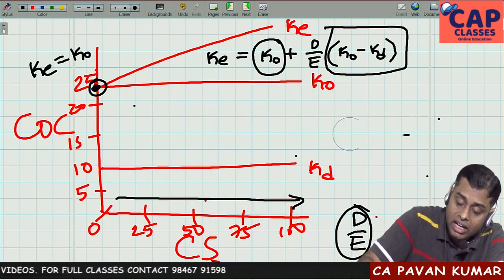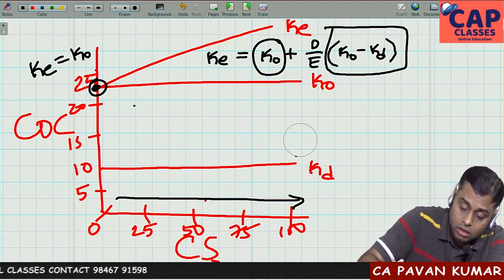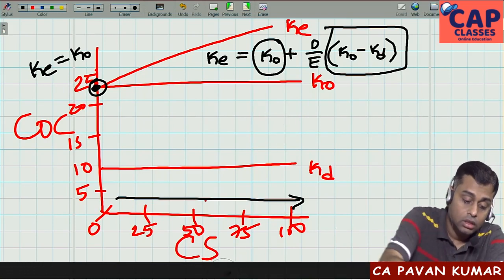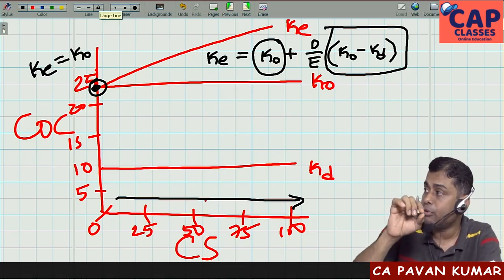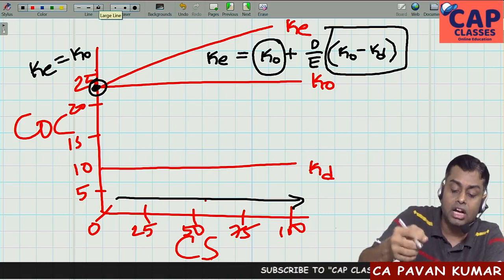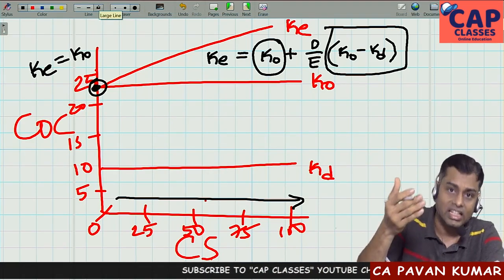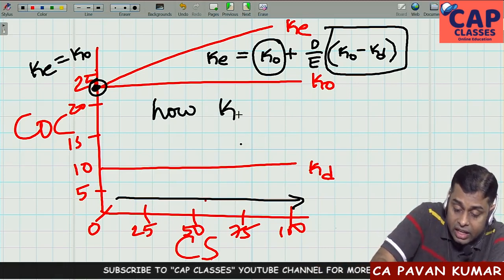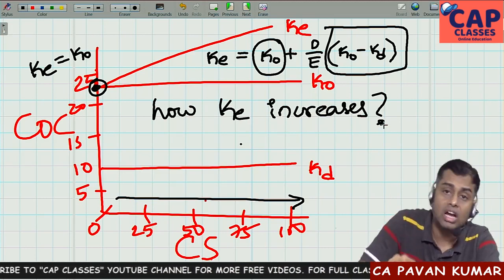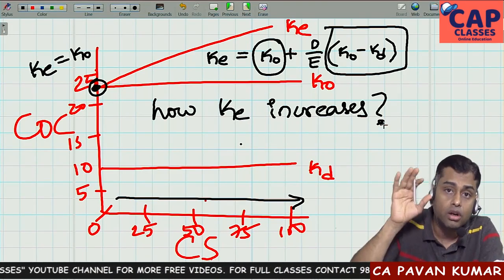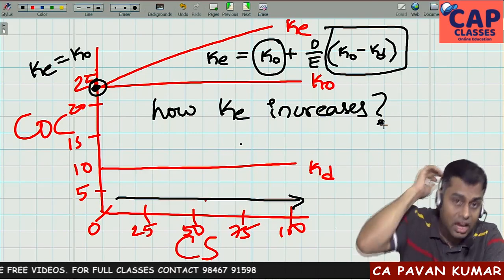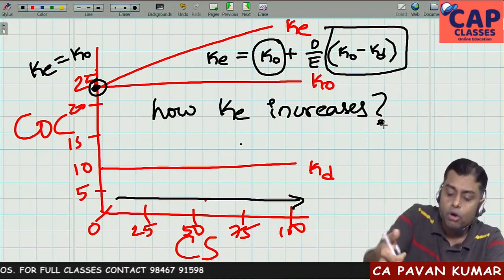Just look at the formula and understand its components. Though the net operating income approach gave the same theory, it failed to prove operationally how KO is constant and how KE increases. MM approach answered this by providing the formula KE = KO + (D/E)(KO − KD), giving full operational justification and proving the theory.